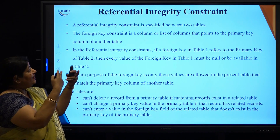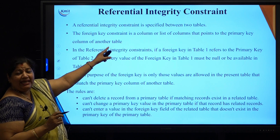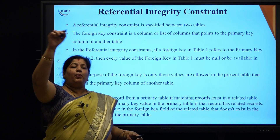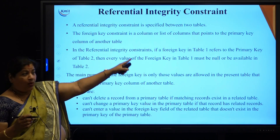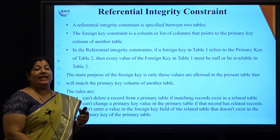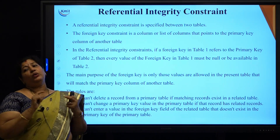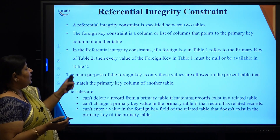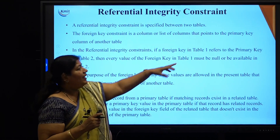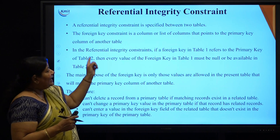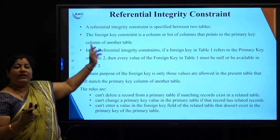Referential integrity constraint is basically to have a reference or show a relation between two tables. The foreign key constraint is a column or list of columns that points to the primary key of another table. This is called referential integrity because it maintains integrity between two tables. The rule says that if a column is a foreign key in table 1, it refers to the primary key of table 2. Every value in the foreign key column must be either null or must match a value in the second table.